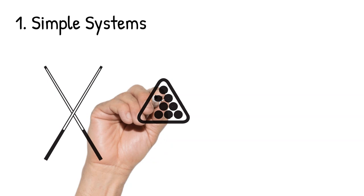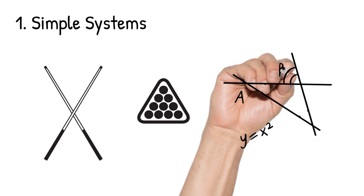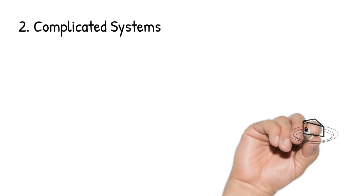Some systems are simple, like a game of billiards. It has generally similar components that follow a few simple rules, and the outcomes are additive. With the right measurements and mathematics, you can predict each shot and each outcome.